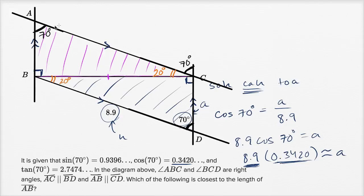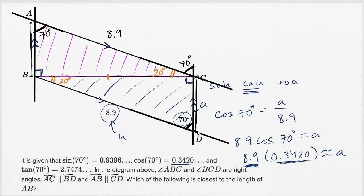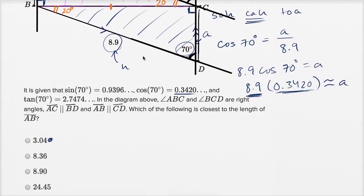Both of these triangles have all of their interior angles the same — their corresponding interior angles are congruent. That by itself would make them similar. But then one of the corresponding sides is also congruent — the shared side. So between the angles being congruent and the side being congruent, we know the triangles themselves are congruent. So if the hypotenuse of BCD is 8.9, then the hypotenuse of ABC is also going to be 8.9. Figuring out the length of AB is exactly the same as figuring out the length of CD, which is 3.04.